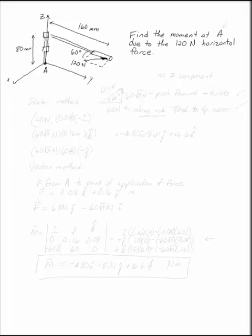Find the moment at A due to the 120 newton horizontal force. We're going to do this in two different ways. I'm going to do it using the scalar method, and I'm going to do it using a vector method so that you can see how those would look and so that you can see that either way those are going to give you the same answer.